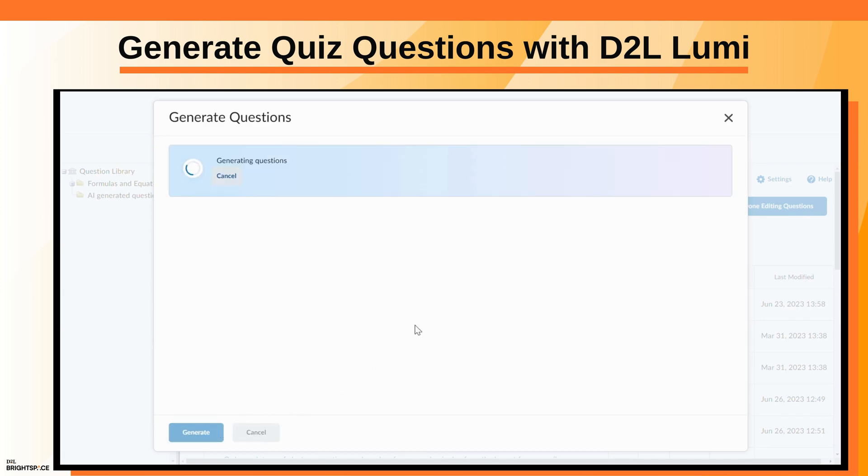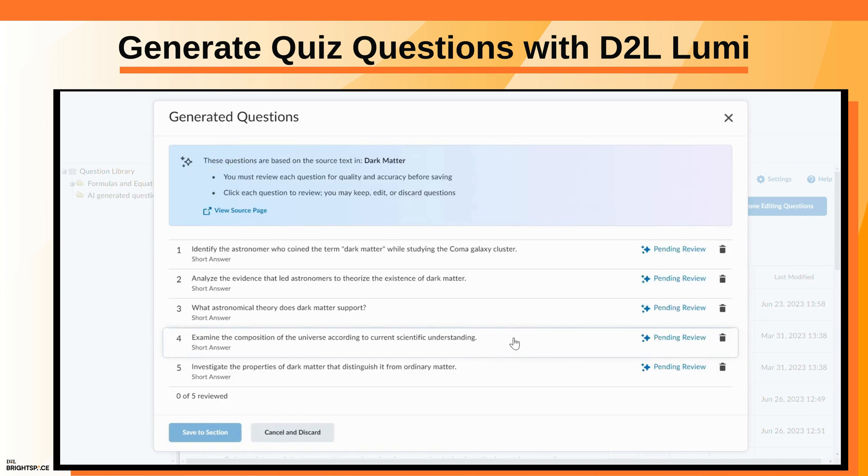Click Generate. The generated questions must be reviewed before they can be added to Question Library. Click Pending Review on the first question to begin.